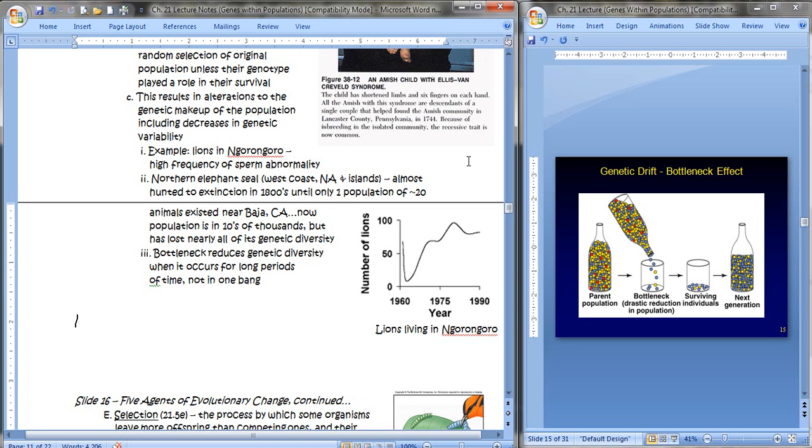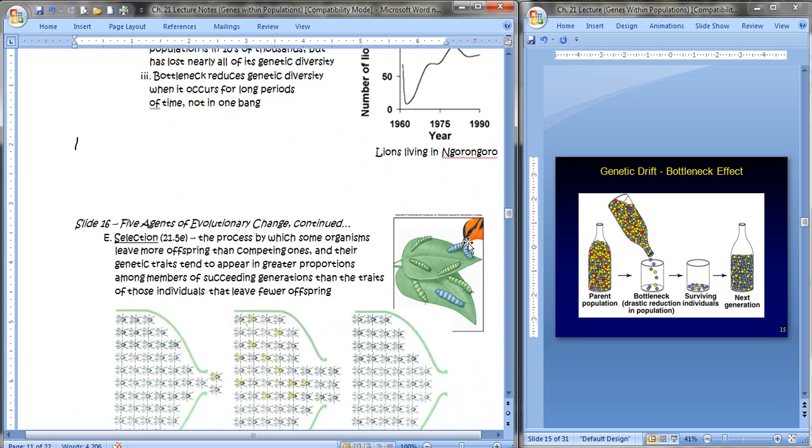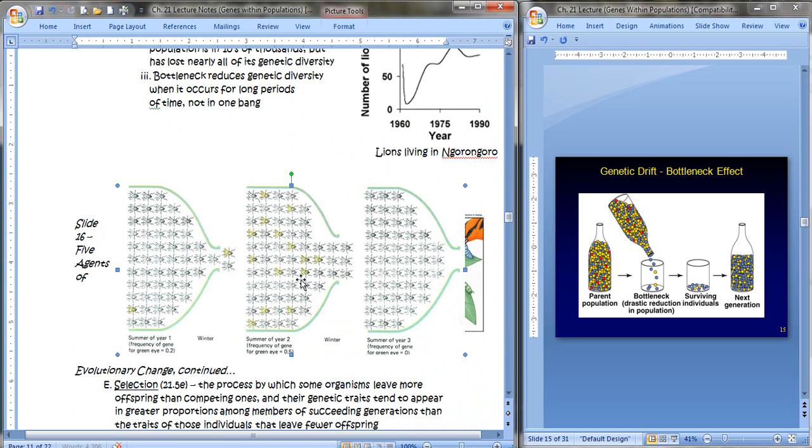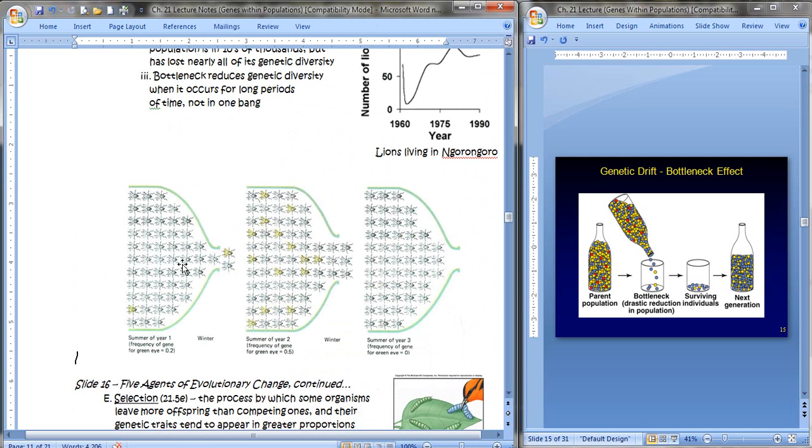This is also true of California condors whose population was reduced to about a size of eight or nine animals. The northern elephant seal along the west coast of North America and its islands were hunted almost to extinction in the 1800s until only one population of about 20 animals existed. And now down in Baja, California. But of course, that population was probably different than the populations up north. Now the population is in the tens of thousands, but it's lost nearly all of its genetic diversity.